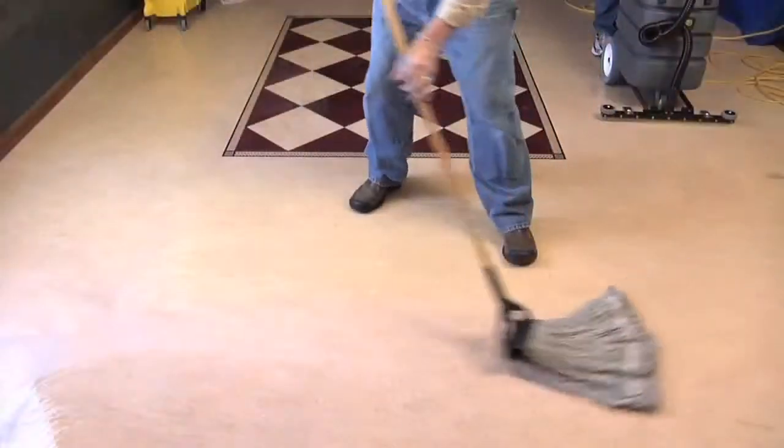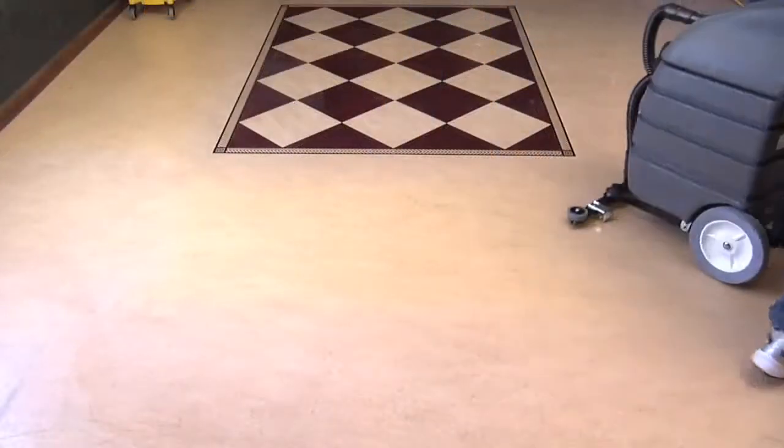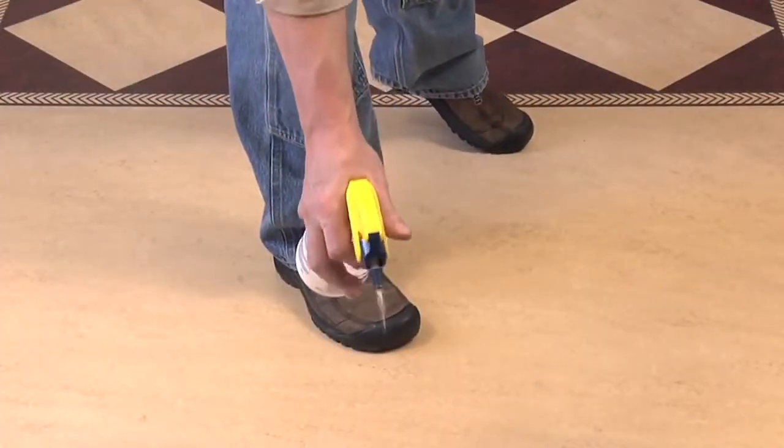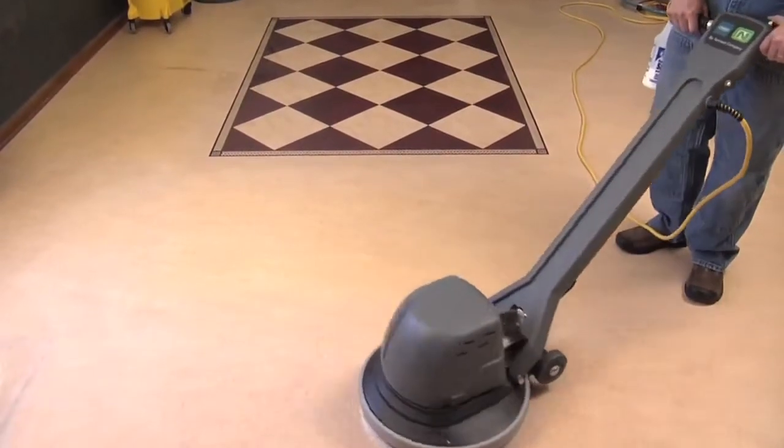For light soiling, the floor should be damp mopped or auto scrubbed with a neutral pH detergent, ranging from six to eight. In applications where traffic is light, a periodic spray buff can extend the life of Top Shield 2.